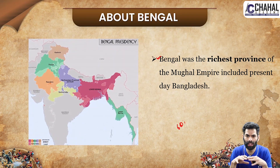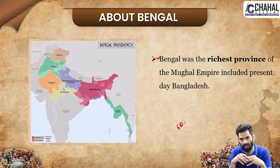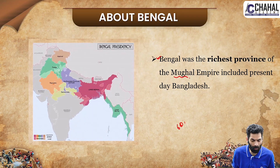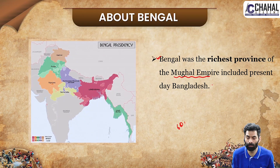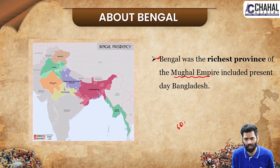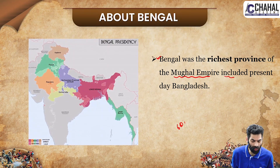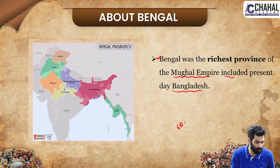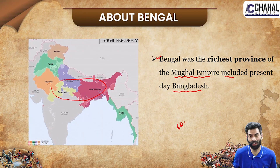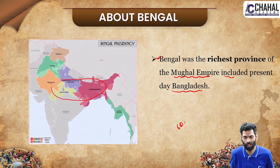Bengal was the first area of British interest. It was very important in the Mughal Empire, and included the present-day area of Bangladesh. This made it a very significant region for the East India Company.